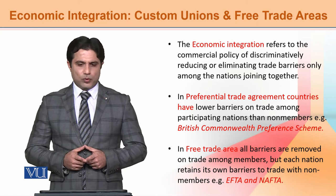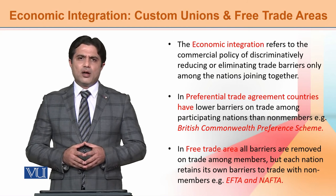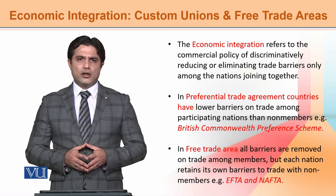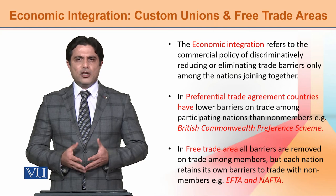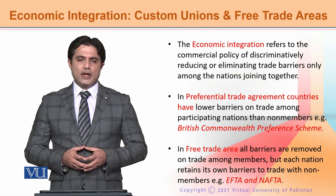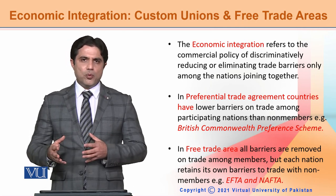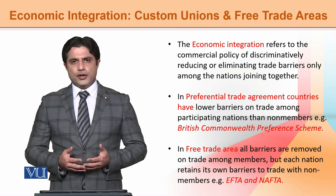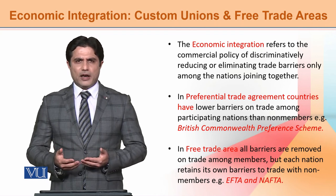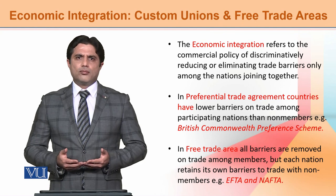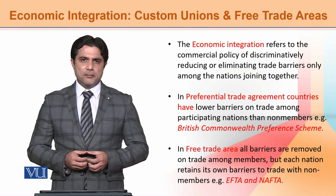A well-known example is the North American Free Trade Agreement. In this particular area, the surrounding member countries have come together. In North America, three countries — the US, Canada, and Mexico — have an agreement where trade is totally free, and movement of commodities from one place to another is unrestricted. This is a form of customs and economic integration where free trade areas are created.